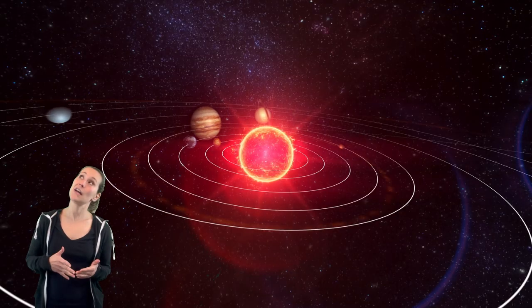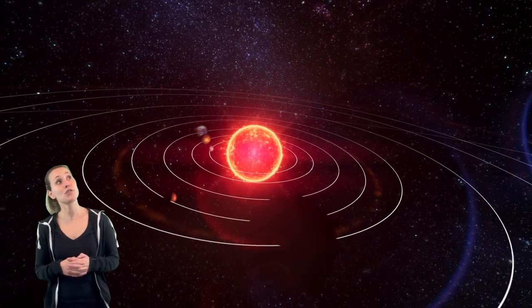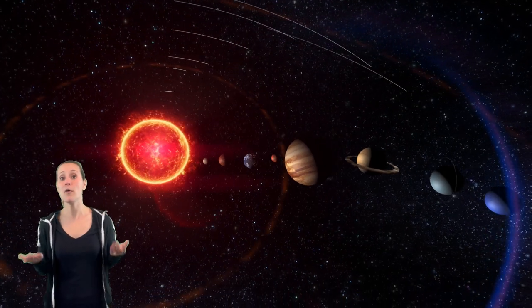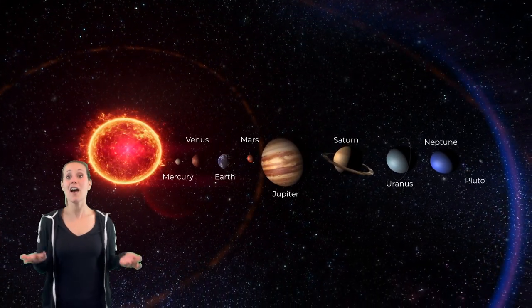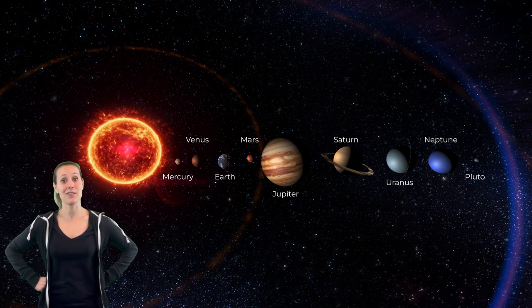When I was younger, to learn all the planets, we sang a song like this. Sun, Mercury, Venus, Earth, and Mars, and Jupiter, Saturn, Uranus, Neptune, and Pluto are the planets of the solar system. I still remember that song from when I was your age. That was a long time ago. Sometimes singing a song helps us remember. Maybe we'll sing it again at the end after we learn a little bit about all these planets.